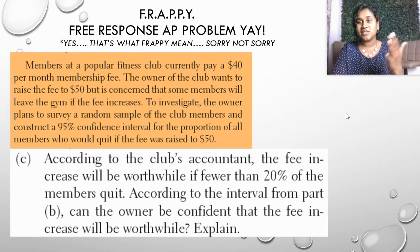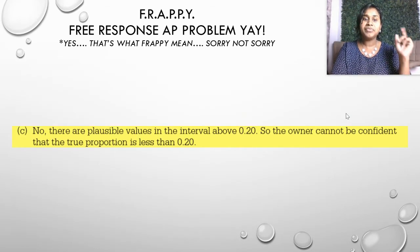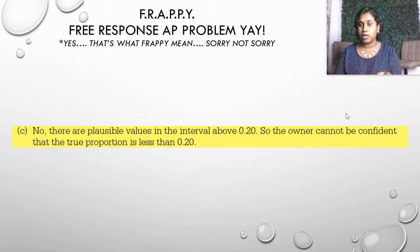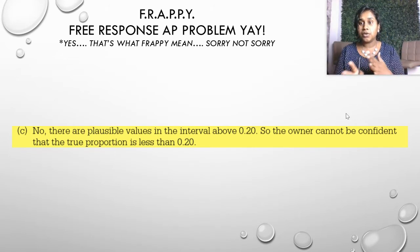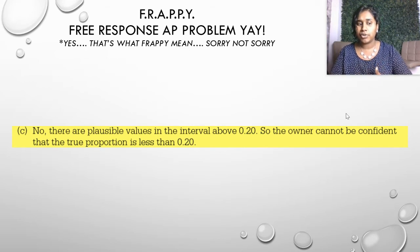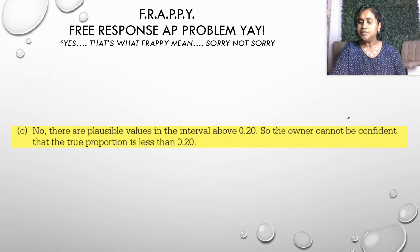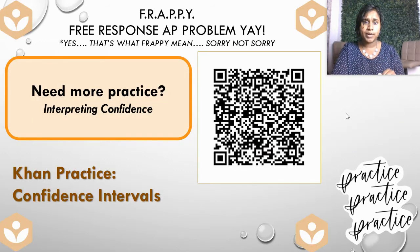So here's the wrap-up: No, there are plausible values in the interval above 0.20, so the owner cannot be confident that the true proportion is less than 0.20. I would not be confident to go ahead with raising that membership fee.